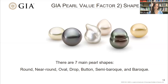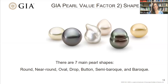The second GIA pearl value factor is shape. There are seven main pearl shapes: round, near round, oval, drop, button, semi-baroque, and baroque. Pearl shapes are divided into two categories: symmetrical and asymmetrical. Semi-baroque can be used in two ways — first, as a shape modifier in cases where there's an identifiable shape that is somewhat asymmetrical, such as a semi-baroque drop. The second case is when you have a crossover of shapes — something might be like an oval button but slightly asymmetrical, and in that case there are too many options so you can just call it a semi-baroque pearl.